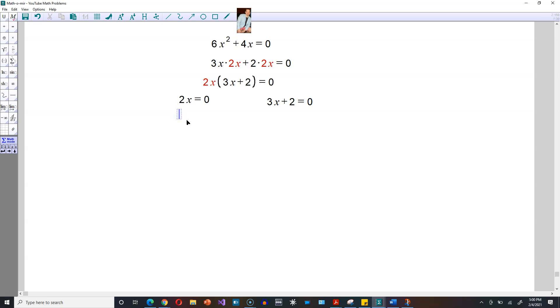For 2x to be equal to 0, you take 2x, you divide by 2, you also take 0 on the right-hand side, and you divide that by 2. On the left-hand side, you end up with 1x equals 0 divided by 2, which is 0. Of course, we just write x equals 0.